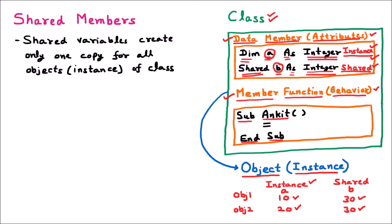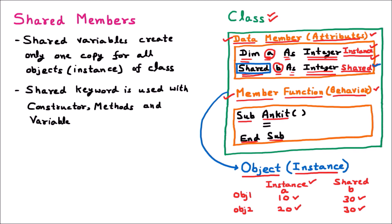How do we identify whether a variable is shared or an instance variable? Whenever we see the 'Shared' keyword before it, that identifies it as a shared variable. In the program we can see the shared keyword is used. If the shared keyword is used before any method, that is called a shared method. If used before a variable, that is a shared variable. If used before a constructor, that is called a shared constructor.